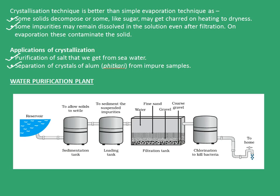Now let's briefly discuss a water purification plant. Water from the reservoir is first passed into a sedimentation tank where the solids are allowed to settle. Then it passes through a loading tank to sediment the suspended impurities. The next step is the filtration tank, where fine impurities are filtered out of the water. In the end it is passed through a chlorination plant to kill the bacteria present in the water, and this water is then supplied to homes.